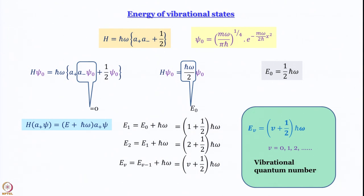Before going further, since I am a spectroscopist, I like to rewrite this equation. Recall that ω is the angular frequency. A spectroscopist usually prefers frequency ν over angular frequency — just by convention. Writing ℏ = h/2π and ω = 2πν, the 2π factors cancel and ℏω = hν.